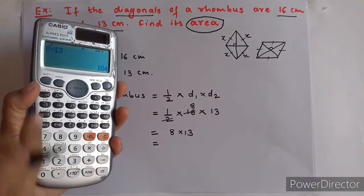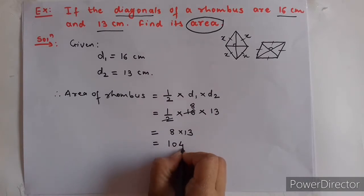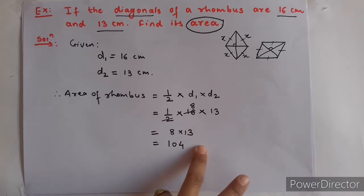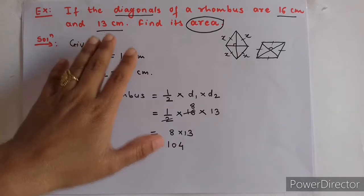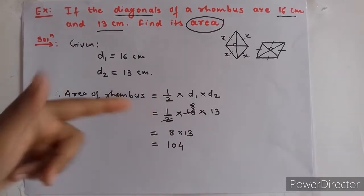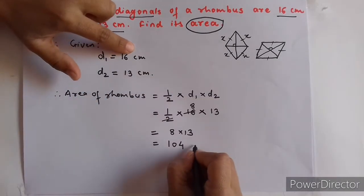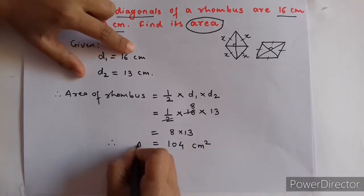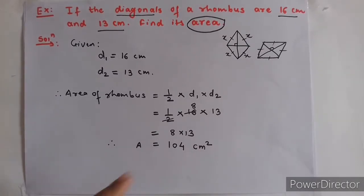8 into 13 equals 104. Now we also need to write the unit. If meters are given, write meters; if centimeters are given, write centimeters. The unit of area has a square, so the unit here is centimeter squared. Therefore, area of rhombus equals 104 cm².